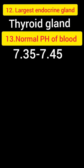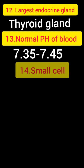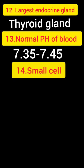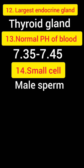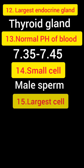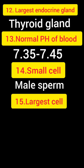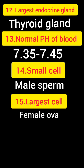The next question is the smallest cell. The right answer is the male sperm — it is the smallest cell of our body. The largest cell is the female ovum. The female ovum is the largest cell and the male sperm is the smallest cell.